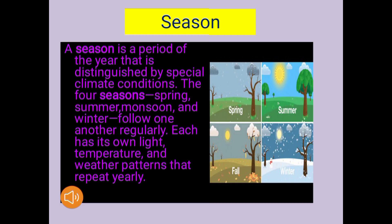Today's first topic is season. First, let us know what a season is. A season is a period of the year that is distinguished by special climate conditions. We have 6 seasons, but now we will focus on 4 seasons. These are spring, summer, monsoon, and winter. They follow one another regularly, and each has its own light, temperature, and weather patterns that repeat yearly.